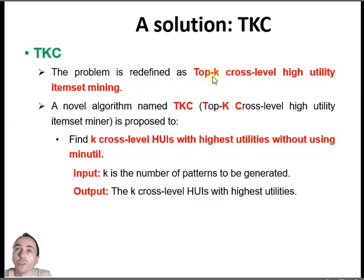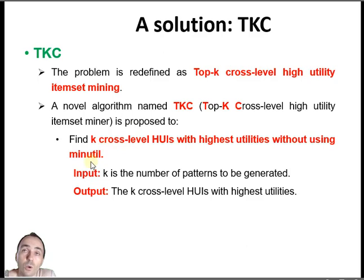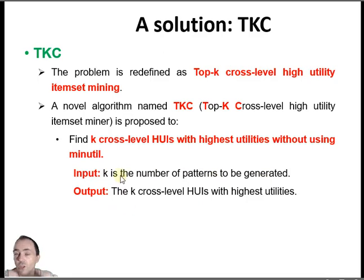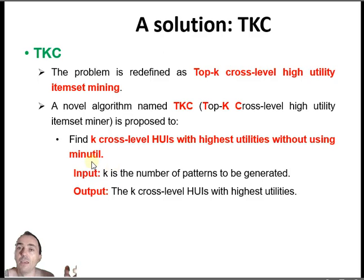Our solution in this paper is a new algorithm we call TKC, for top-K cross-level high utility item set mining. The idea is to change the problem: we don't use the minimum utility parameter. Instead, the input will be a parameter K — the number of patterns we want to find. The algorithm will give you the top-K patterns: the K patterns that make the most money in your database. You don't need to set the minimum utility; you set directly K, for example 'I want to find 1,000 cross-level high utility item sets,' and the algorithm gives you exactly the top 1,000.